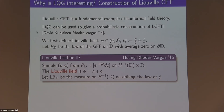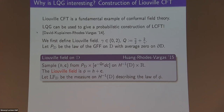For the second result, I want to explain Liouville conformal field theory. LCFT is a fundamental example of conformal field theory with a continuous spectrum. LQG can be used to give a probabilistic construction of LCFT. We have parameter gamma between 0 and 2, and Q = gamma/2 + 2/gamma. We write P_D for the law of the Gaussian free field on the unit disk, normalized to have average zero on the unit circle.